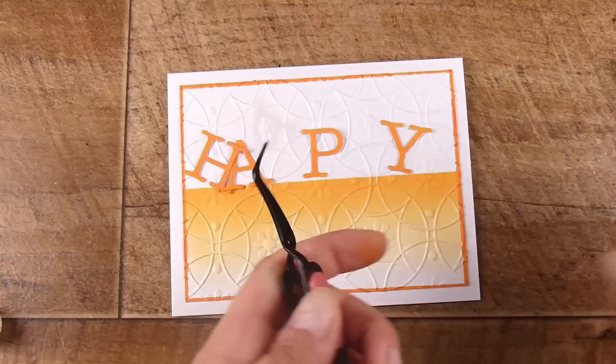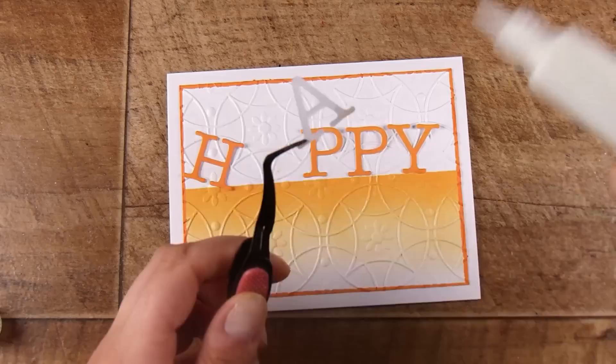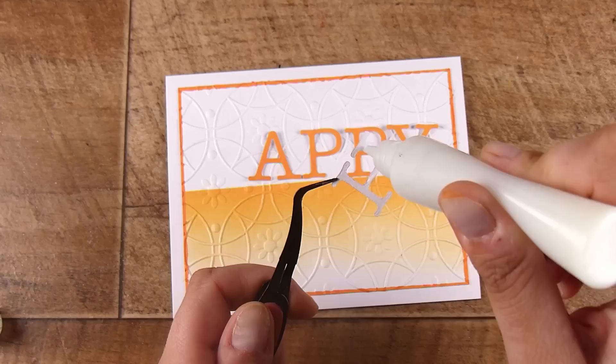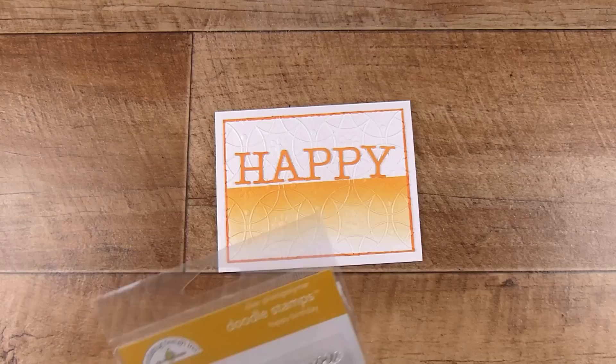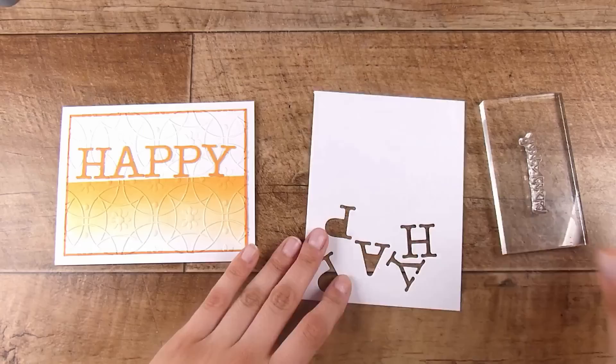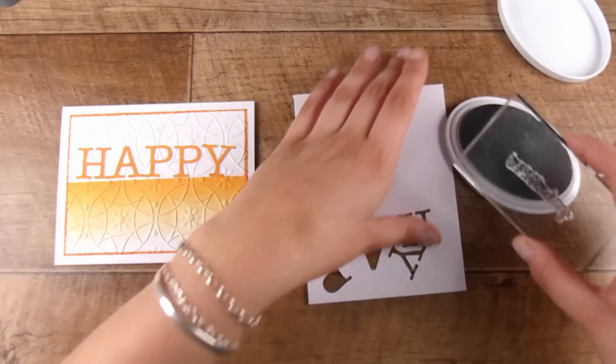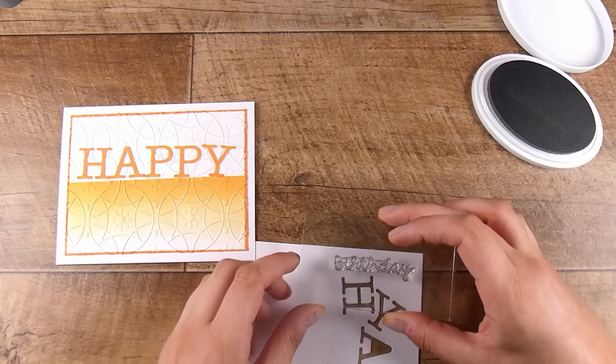I'm using some liquid glue—inside this little glue bottle is the Ranger Multi-Medium in the matte finish. I buy these specific glue bottles which are perfect, they never clog for me in warm or cold environments. I have a video on my channel showing the mess-free and stress-free way to fill those glue bottles.